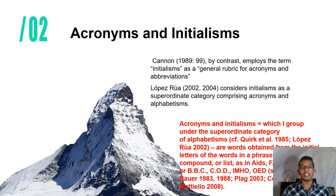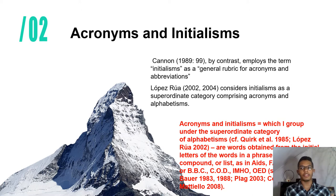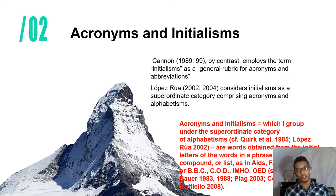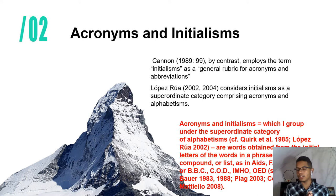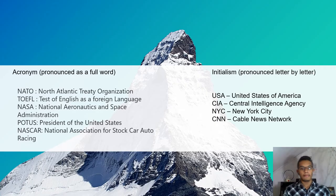Now I'm going to talk about acronyms and initialisms. These are another type of abbreviation that are very important — we really need to know about them. When we speak about acronyms, we refer to a type of abbreviation that usually takes the first letter of a series of words and can be pronounced. They are grouped together because they are similar, but they are not the same. I'm going to tell you the difference.